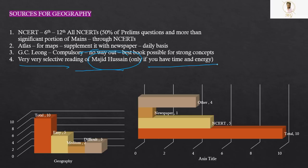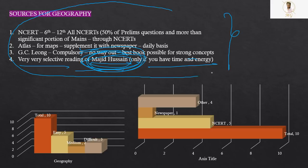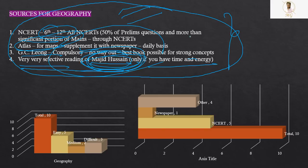And very very selective reading of Majid Hussain. If you have time and energy, sometimes Majid Hussain works in mains. But you have to read it very selectively. Only important chapters such as drainage, physical setting, agriculture of India, like that. So very very selective reading of Majid Hussain. Like you have to do selective reading in Polity, similarly, you have to do selective reading of Majid Hussain in geography. So this is the complete strategy for geography. If you are following these sources, almost all the questions in prelims and the mains can be tackled easily.